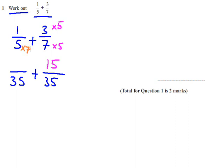So on the left side, we times the 5 by 7. So we have times the 1 by 7. So one-fifth is actually seven-thirty-fifths, and three-sevenths is actually fifteen-thirty-fifths.